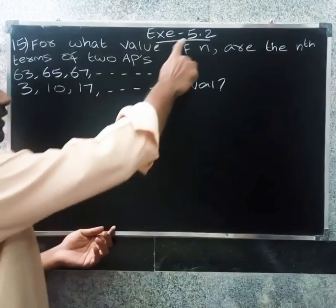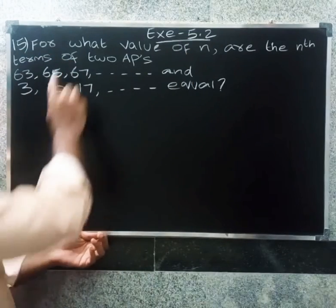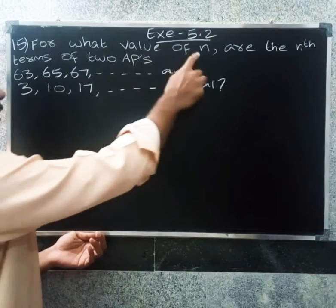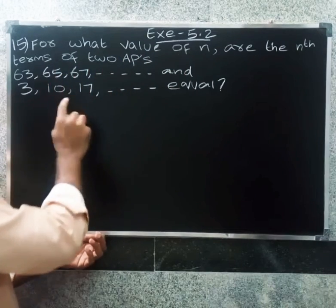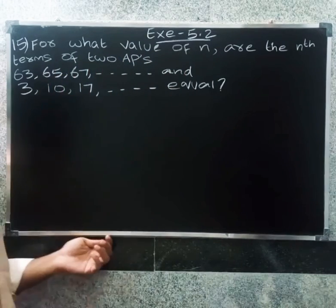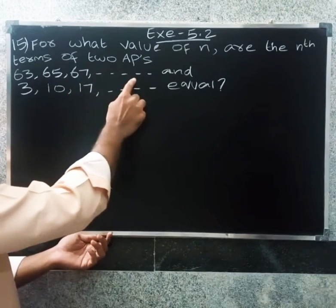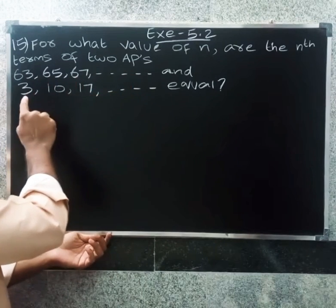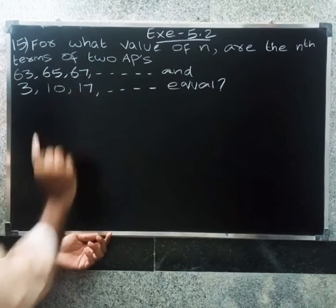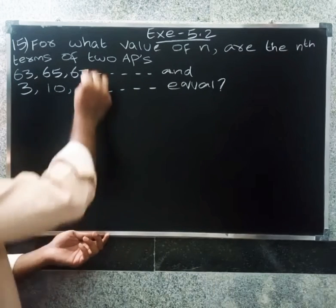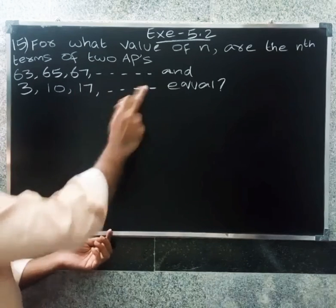Okay friends, let's do our Exercise 5.1. What value of n are the nth terms of 2 APs equal? So what value of n — for example, here it is 67. That means 17. This 2 means 67. So the 2 same terms are equal.